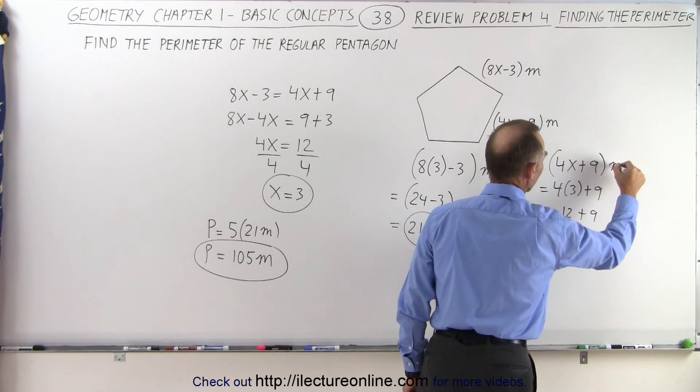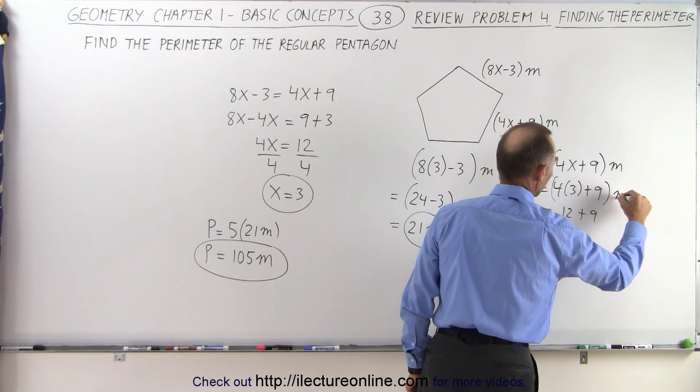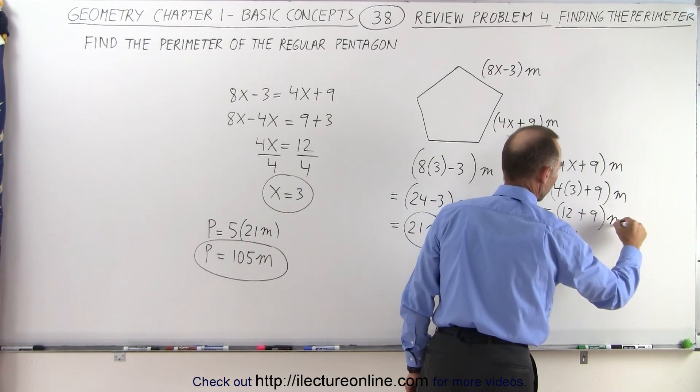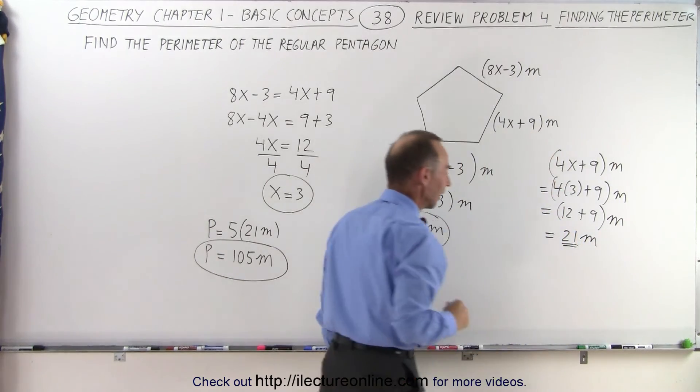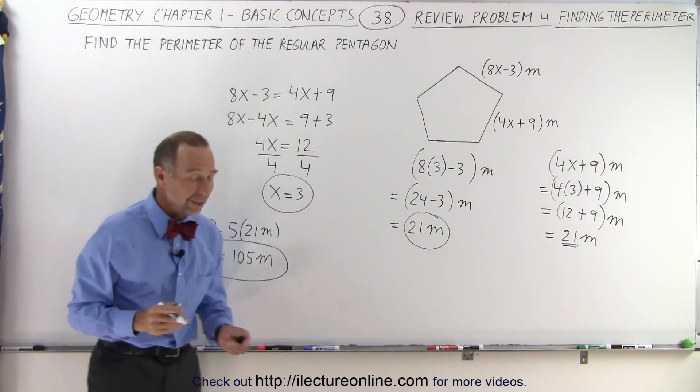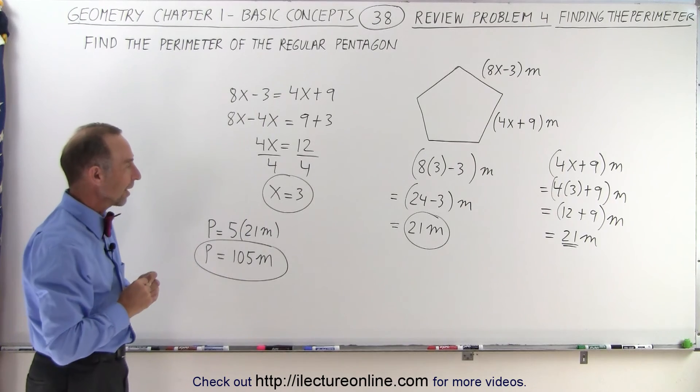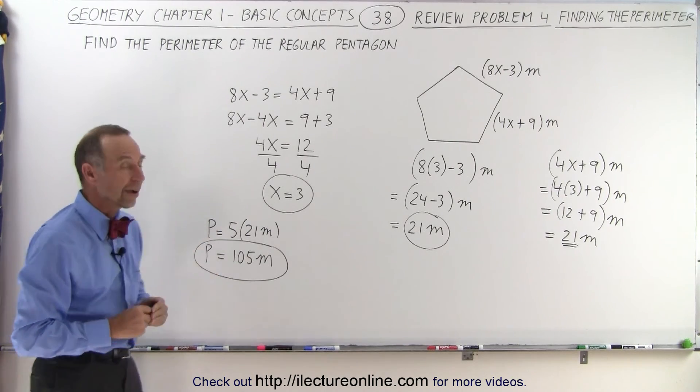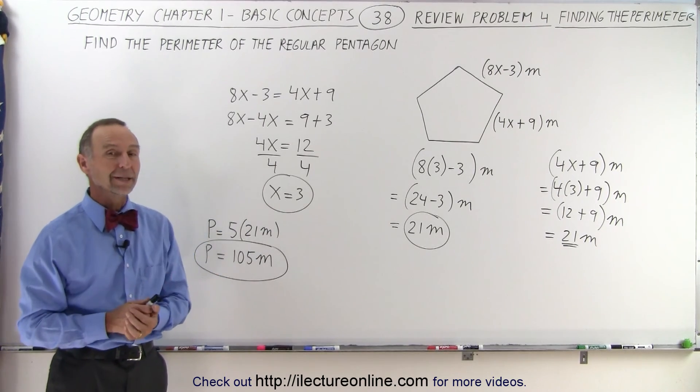These are all in meters. Notice we get the exact same result with either side—that's a good way to check. This is how we find the perimeter of the pentagon.